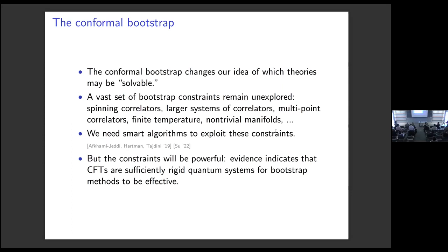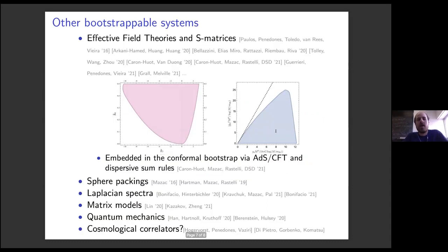This is my last slide. In recent years, it's been understood that there are other examples of basically symmetry structures that make a theory amenable to a bootstrap analysis. For example, effective field theories are sufficiently rigid systems. They have Poincaré symmetry and unitarity and causality, and these are enough to do an interesting bootstrap analysis. Other examples are coming from mathematics—sphere packings and spectra of Laplacians on various manifolds. Recently, there's a matrix model bootstrap and quantum mechanics bootstrap, and there were interesting developments in possibly bootstrapping cosmological correlators. These are all related to the general question of how much symmetry do we need for these techniques to work. I'll stop there. Thanks a lot.